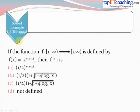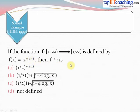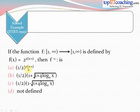Now let's solve an example. A function f is defined from [1, ∞) to [1, ∞), given by f(x) = 2^(x(x−1)). We have to find f inverse. The four options are: (a) 1/2^(x(x−1)), (b) (1/2)(1 + √(1 + 4·log x to base 2)), (c) (1/2)(1 − √(1 + 4·log x to base 2)), and (d) not defined.